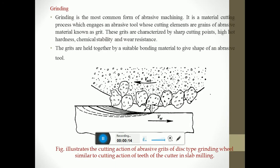Grinding is the most common form of abrasive machining. It is a material cutting process which engages an abrasive tool whose cutting elements are grains of abrasive material known as grits. These grits are characterized by sharp cutting points, high hardness, chemical stability and wear resistance. The grits are held together by a suitable bonding material to give the shape of an abrasive tool.